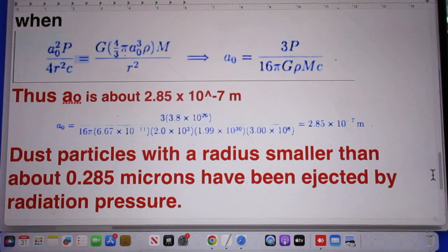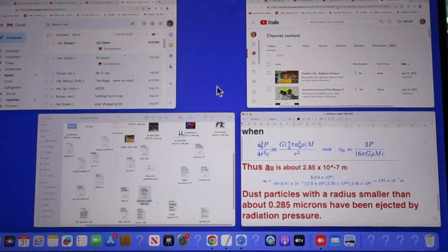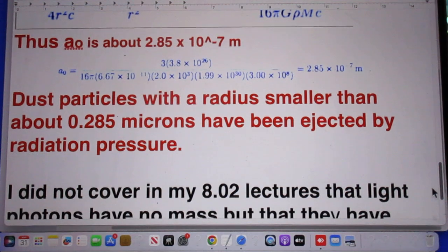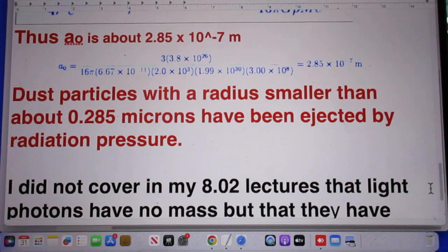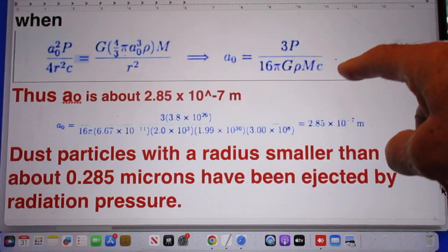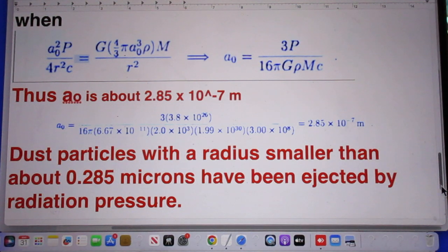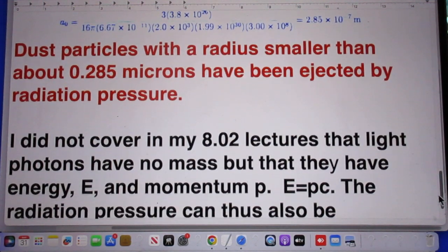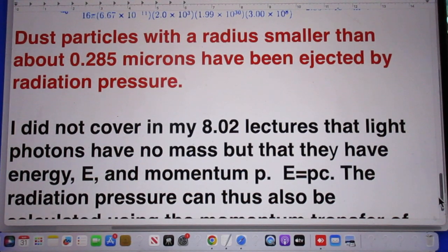Depending a little bit on what you have taken for the mass of the sun, some of you may differ by one percent. We should agree that A zero is about 2.85 times 10 to the minus 7 meters. I show you here the calculation if you're interested. In other words, dust particles with a radius smaller than about 0.285 microns have been ejected by radiation pressure.